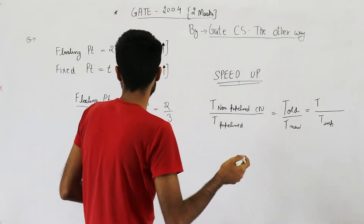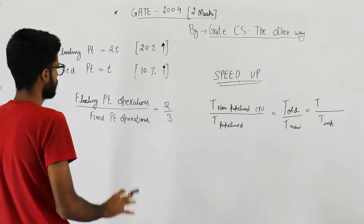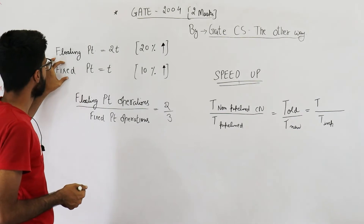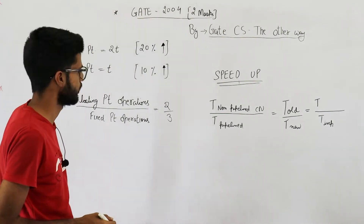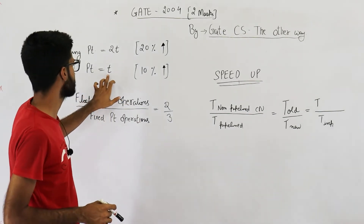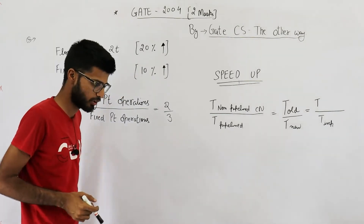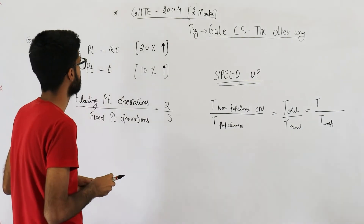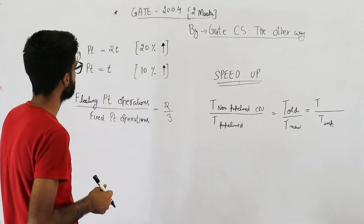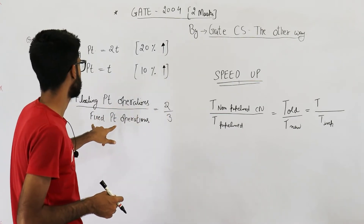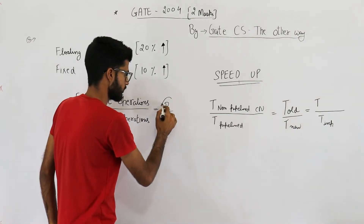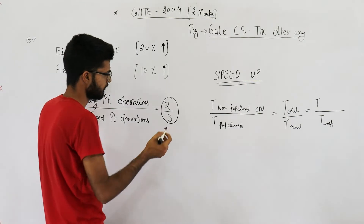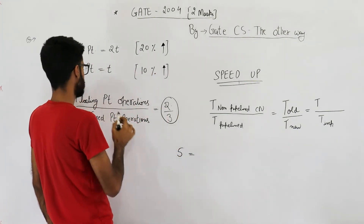Now first let's calculate what was the time taken before any improvements were done. Given that fixed point took half the time compared to floating point, I have assumed fixed point takes t units of time, so floating point is going to take 2t units of time. Let's consider the older scheme — without any improvements. The ratio of floating point to fixed point operations is 2:3, so if total operations are five, two out of five are floating point.